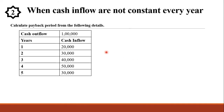Calculate the payback period from the following details. Cash outflow is 1 lakh, that is the investment value. The number of years are given as 5. The cash inflows for each year are: 20,000, 30,000, 40,000, 50,000, and 30,000. If you look carefully, the cash inflow for each year is different — they are not constant. So whenever the cash inflows are not constant, we will have to do some calculation.